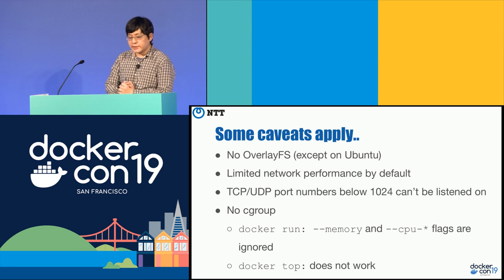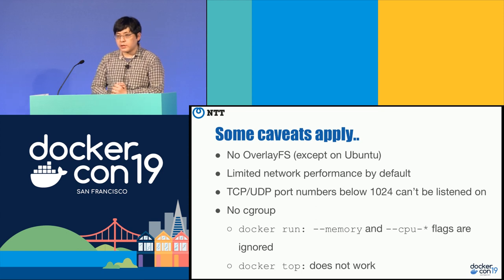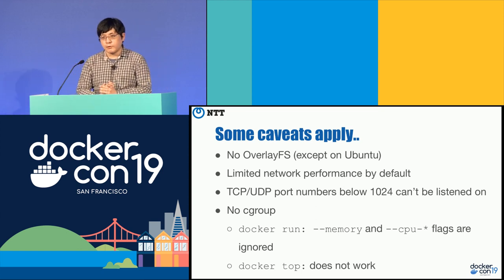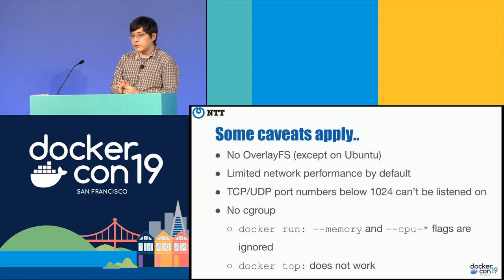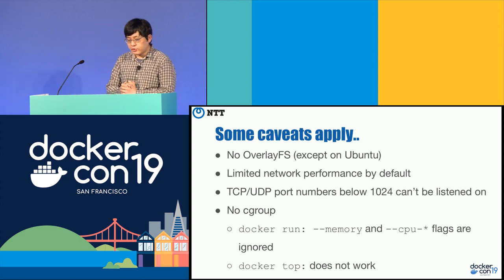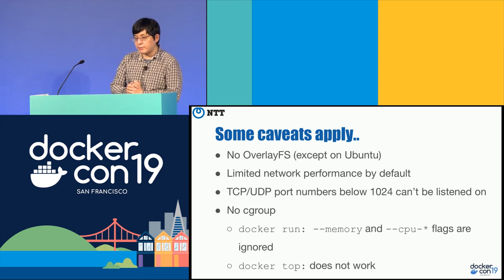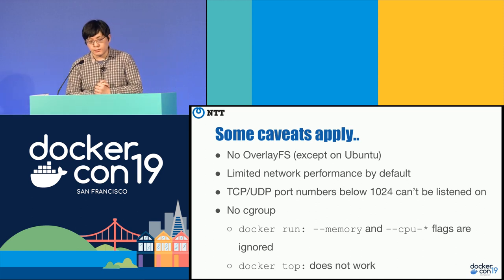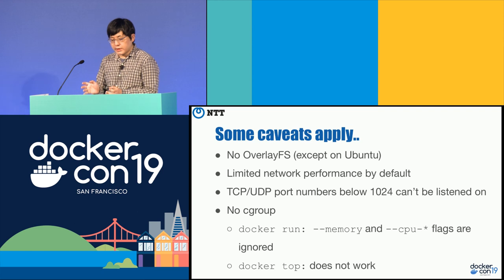There are some limitations. For example, you can't use overlay filesystem unless you're using the Ubuntu kernel. There's also some limitation in network performance. And you can't use TCP port numbers below 1024. But there are workarounds I'll show later.